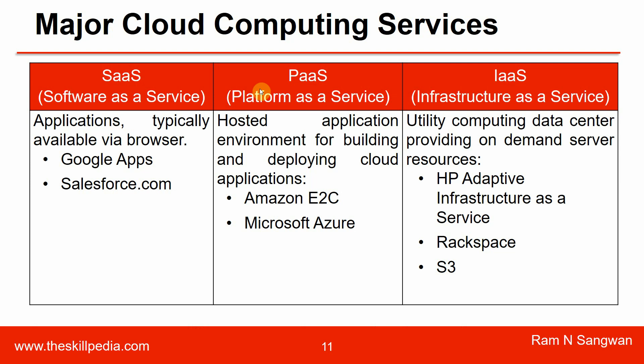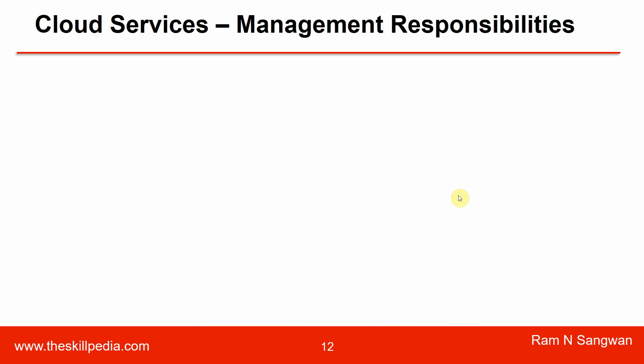Infrastructure as a Service means it is your responsibility to manage everything beyond the raw infrastructure. They give you a virtual machine, but securing, managing, and installing software on that virtual machine is your responsibility. They give you a database, but database security, backup, and everything else is your responsibility. Infrastructure as a Service is utility computing — data center providing on-demand server resources — such as HP Adaptive Infrastructure, Rackspace, S3, or Oracle Cloud Infrastructure (OCI), a Generation 2 cloud.